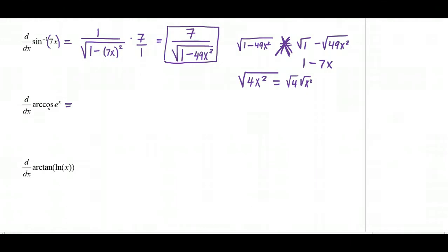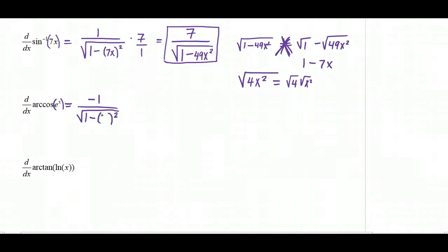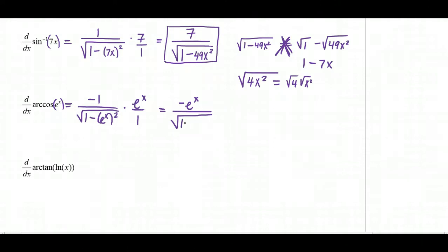For the derivative of arc cosine of e to the x, the derivative of arc cosine is negative one over the square root of one minus x squared. We substitute the inside function e to the x where x would be, then multiply by the derivative of the inside, which is also e to the x. The result is negative e to the x over the square root of one minus e to the 2x.